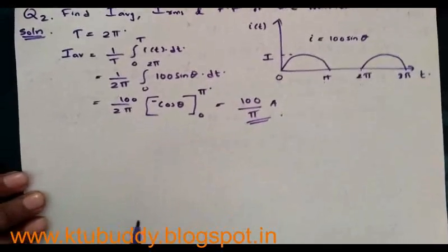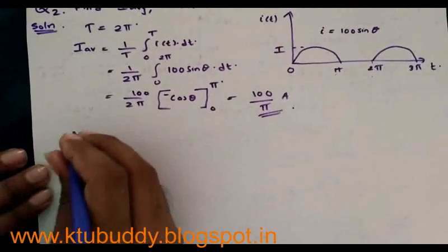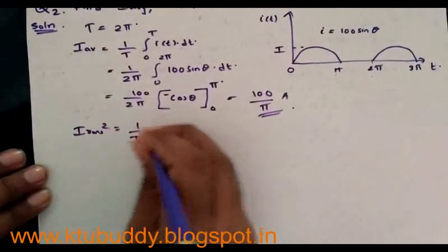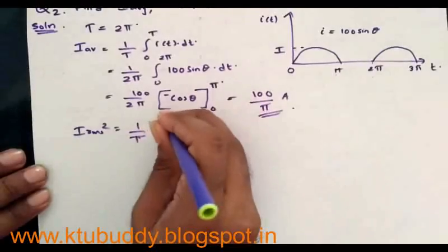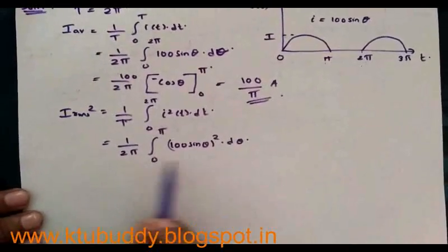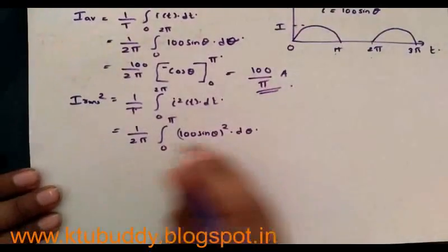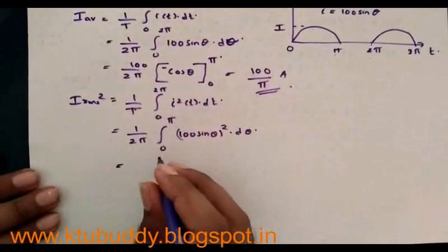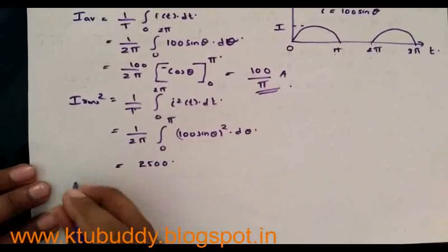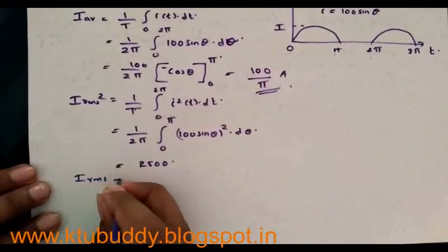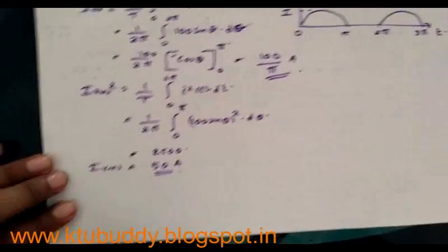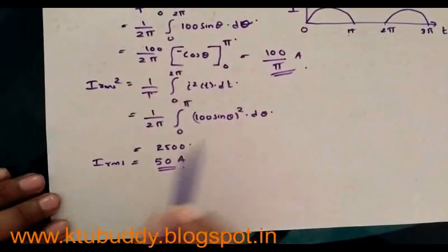Next, we have to determine the RMS value. The equation is: i_rms² = (1/T) × integral from 0 to 2π of i(t)² dt. After integrating, we get the value of i_rms² = 2500. Therefore, i_rms = √2500 = 50 amperes. So the RMS value is 50 amperes.